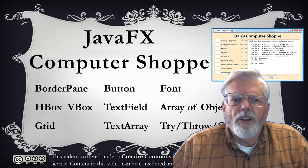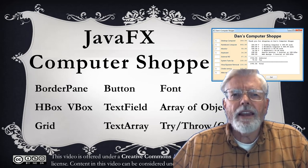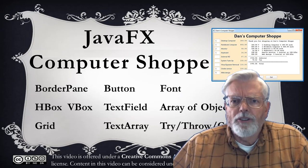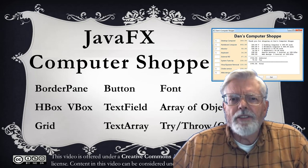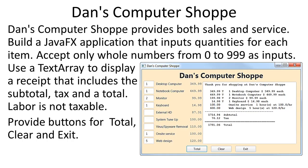Several controls are placed on the form including labels, buttons, text fields, and a text array. Also covered are the JavaFX font, an array of objects, and the try-throw-catch construct. The project definition states: Dan's Computer Shop provides both sales and service. Build a JavaFX application that inputs quantities for each item — only whole numbers from 0 to 999. Use a text array to display a receipt for each item purchased and the subtotal, tax, and total. Labor is not taxable. Provide buttons for total, clear, and exit.